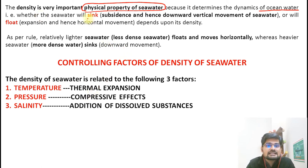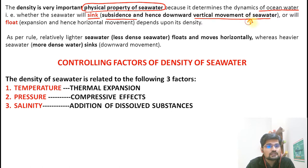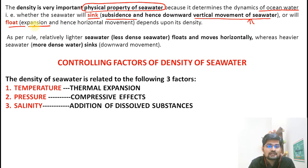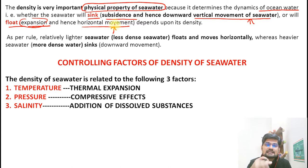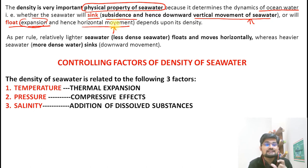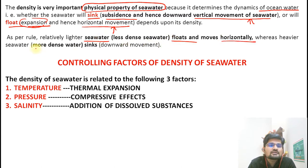Seawater will sink — subsidence — it will go down, triggering downward vertical movement. If it is floating, if it is lighter and less dense, then floating water expands horizontally. So density is linked to sinking or subsidence as well as floating and horizontal movement. Relatively lighter seawater floats and moves horizontally, whereas heavier water sinks down, triggering vertical movement.